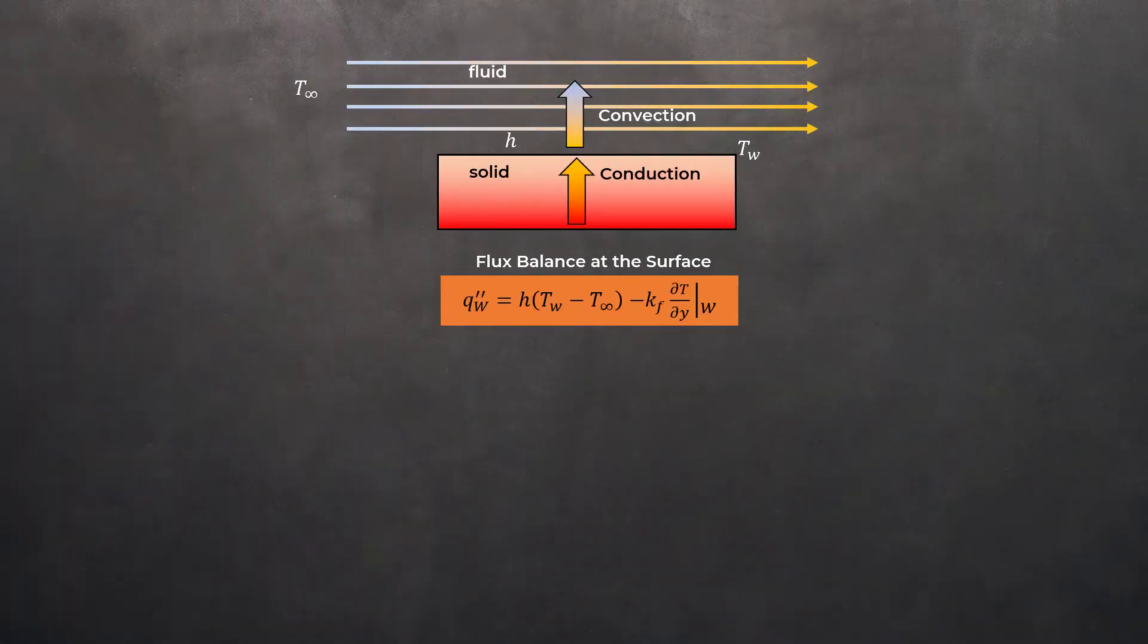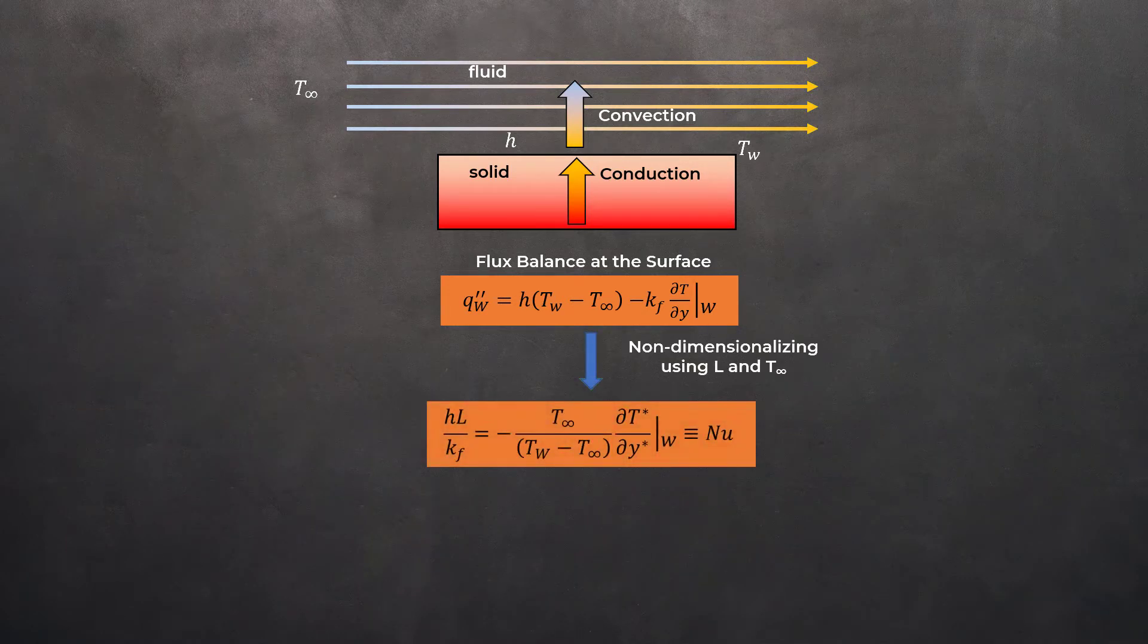Let's go back to the heat flux balance at the wall. If we now non-dimensionalize this equation using a reference length L and a reference temperature T infinity, the heat flux balance can be rewritten as shown here.